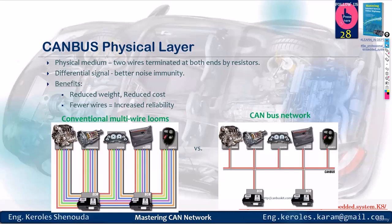How is the CAN bus as a physical layer set up? It consists of two wires whose ends are closed with a resistance of 120 ohms. It has better noise immunity, meaning good protection from noise. It reduces cost, weight, and wires, while increasing reliability.